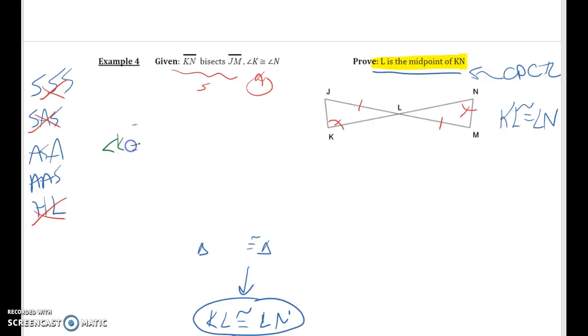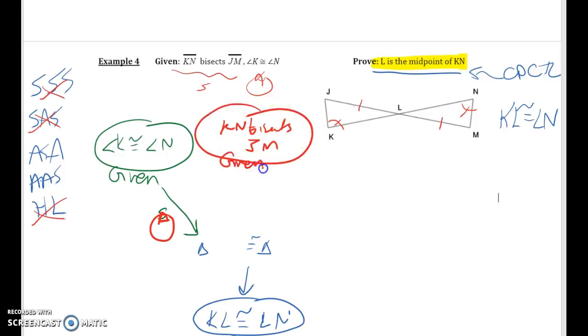So let's get our given information up there. Angle K congruent to angle N, it's given. Sorry, this is, so that's an angle. Then we have KN bisects JM and that is given, and that gives us that JL is congruent to LM, and that is definition of a segment bisector. So that gives us another side.